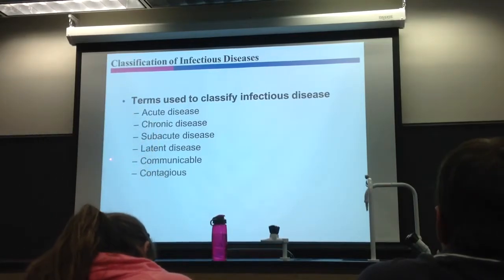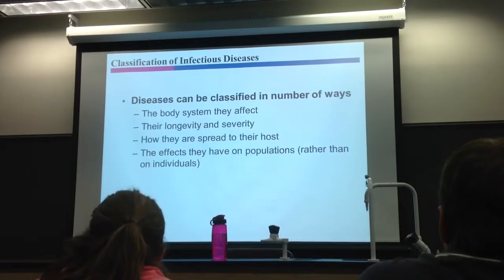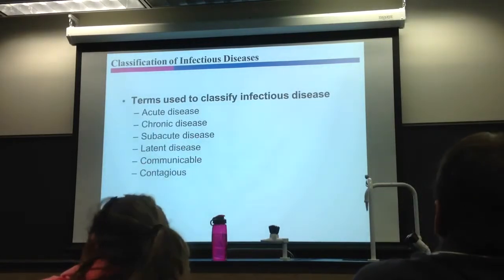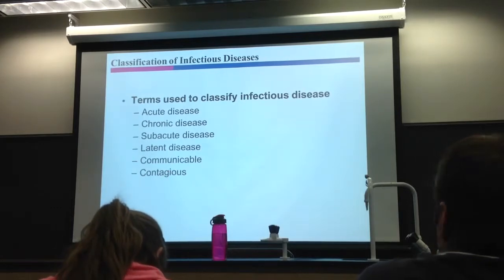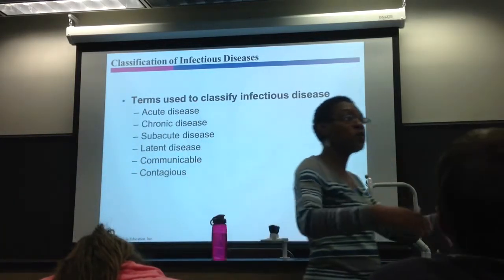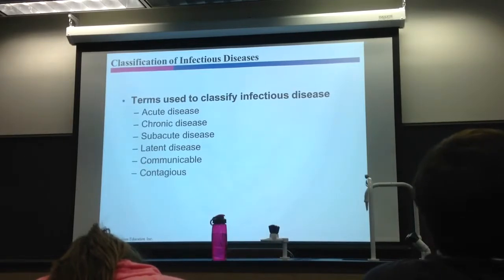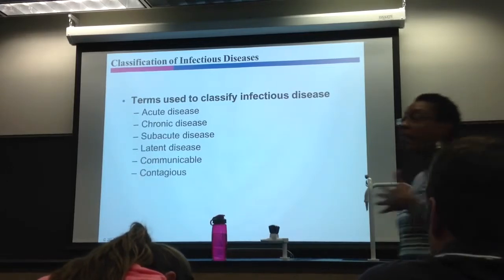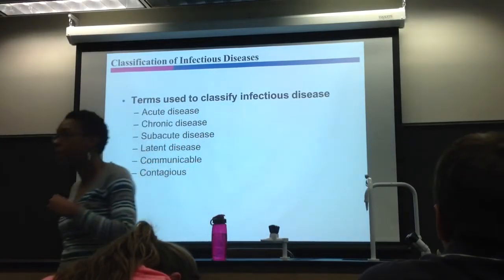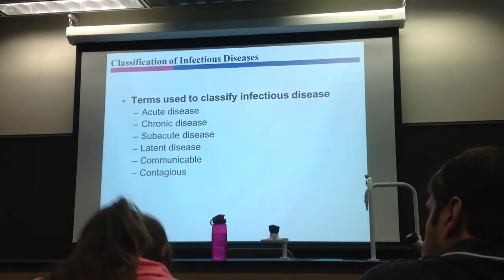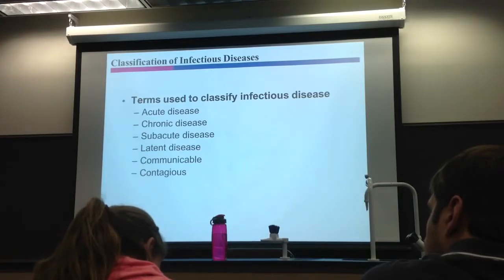The next terms are communicable and contagious — these fall under how diseases are spread. A communicable disease is able to be passed from person to person. Not all infectious diseases are communicable, but most — like HIV, herpes, the cold, and the flu — are communicable, meaning you can get them from somebody else.